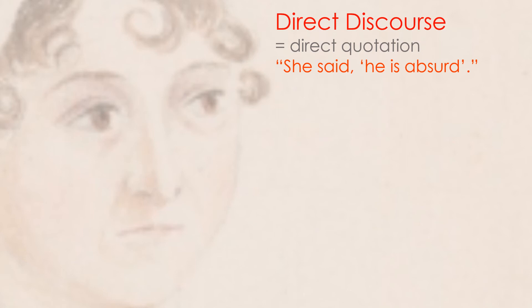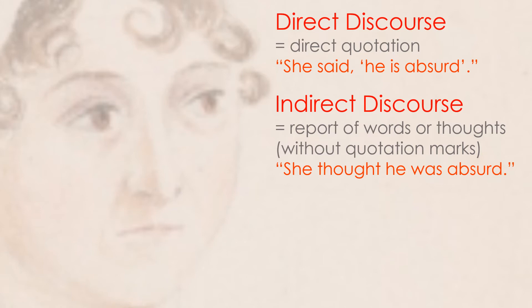There are various ways to present discourse. Direct discourse is direct quotation — a statement of fact of what was said. For example: 'she said, he is absurd.' Indirect discourse is where you report words and thoughts without quotation marks — not a precise transcript of what was said. For example: 'she thought he was absurd.' That's the narrative voice reporting on the thoughts of the character.